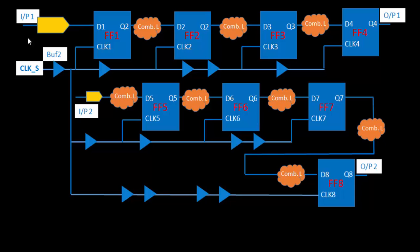In the previous part, we discussed clock structures where flip-flops are not talking with each other. But here in this diagram, you can see that the flip-flops are talking with each other — FF1 to FF4. FF1 gets input, then there is combinational logic, then FF2, and the output of FF2 works as the input of FF3, and so on. Similarly, from FF5 to FF8, these are all talking with each other.